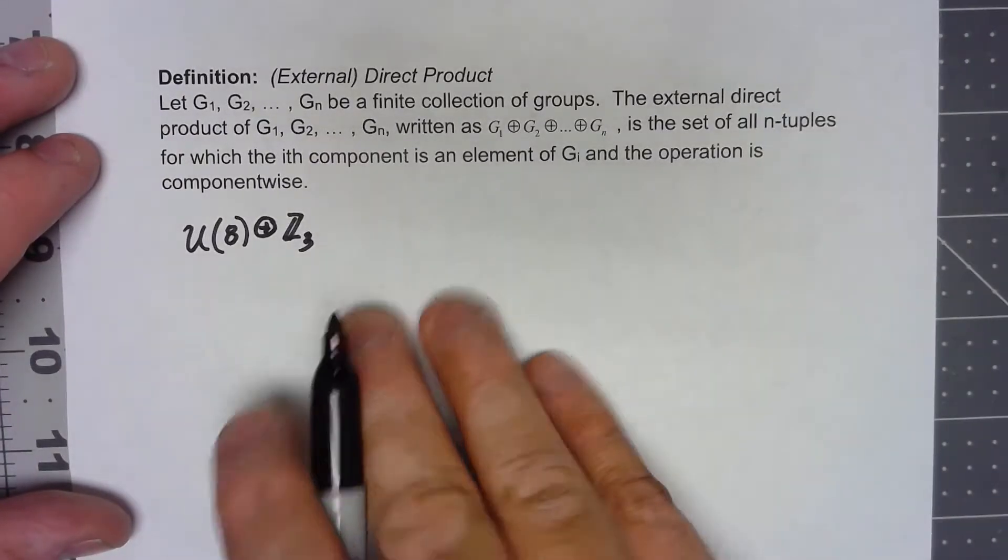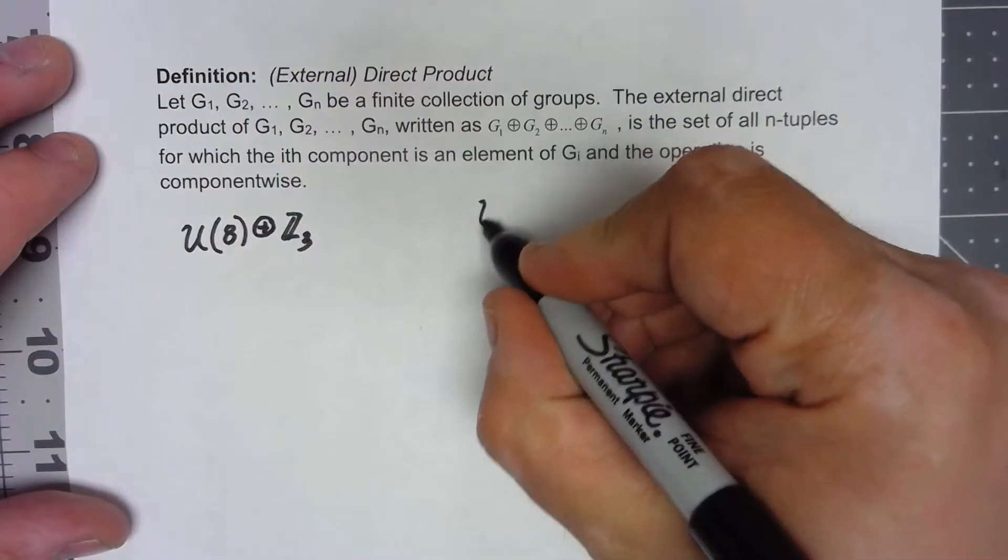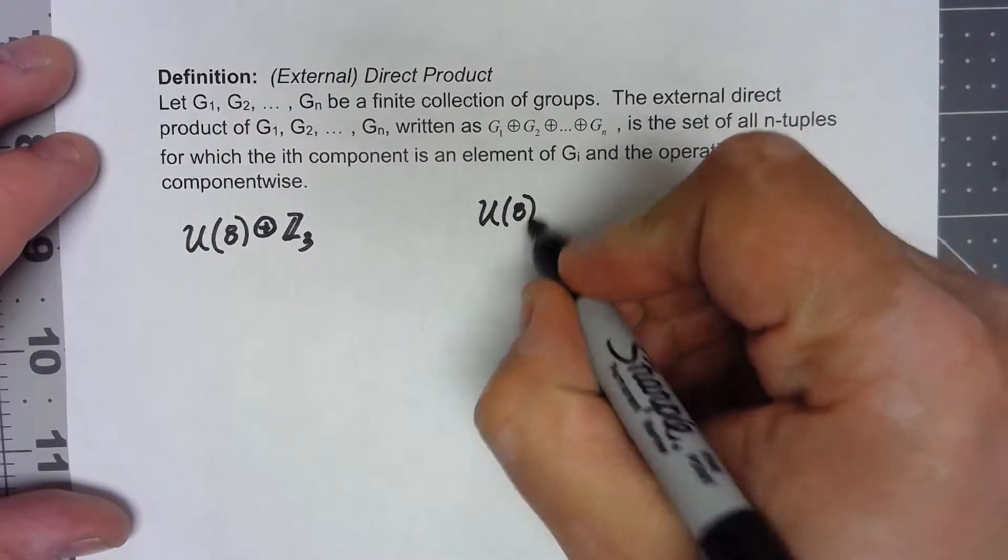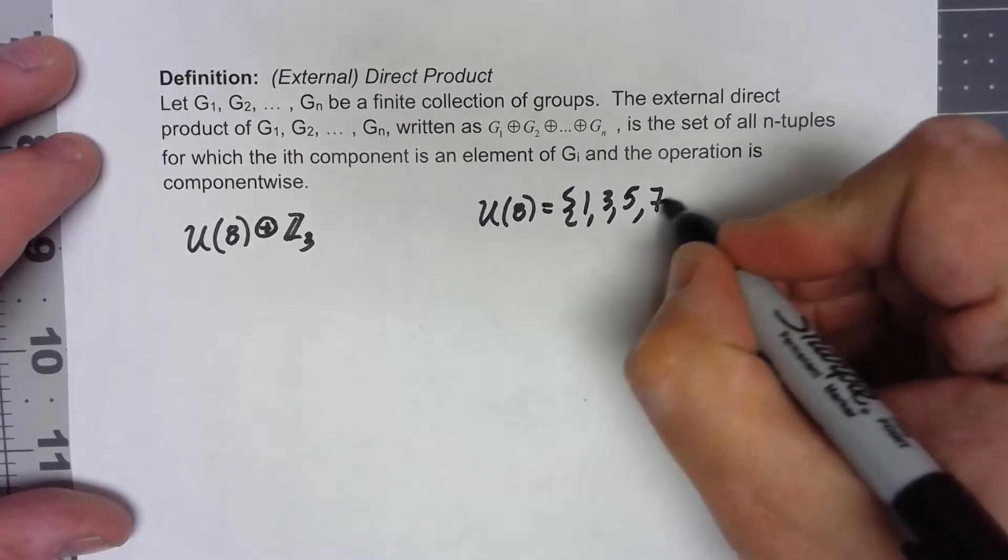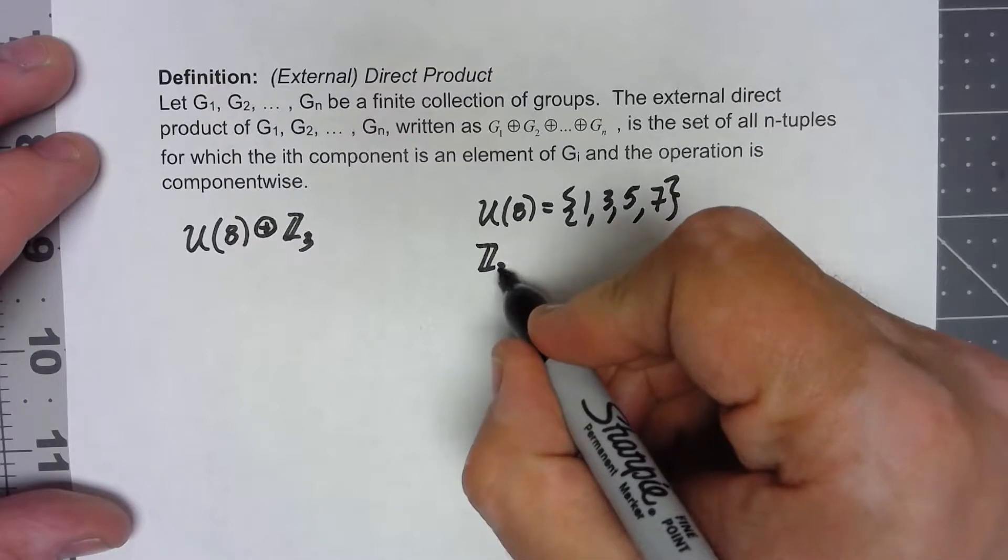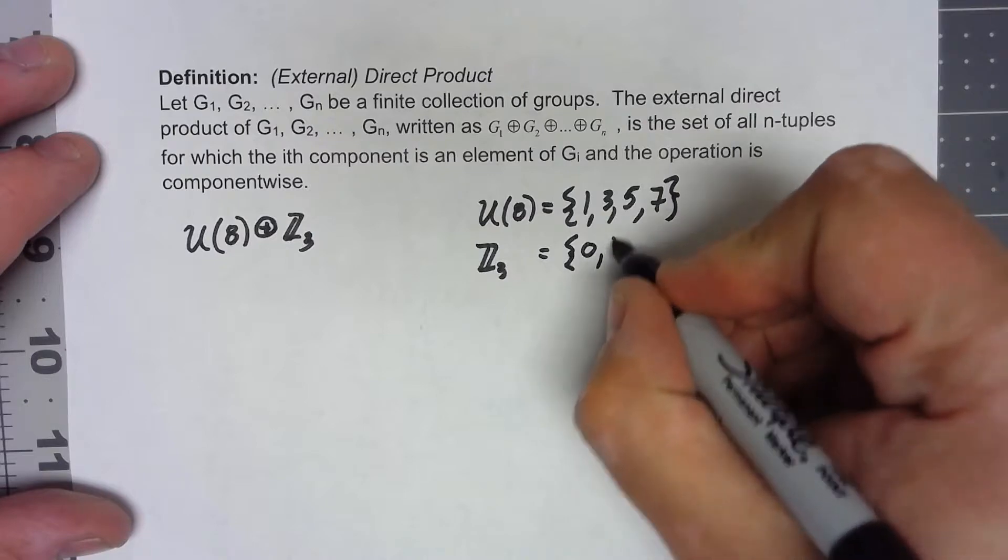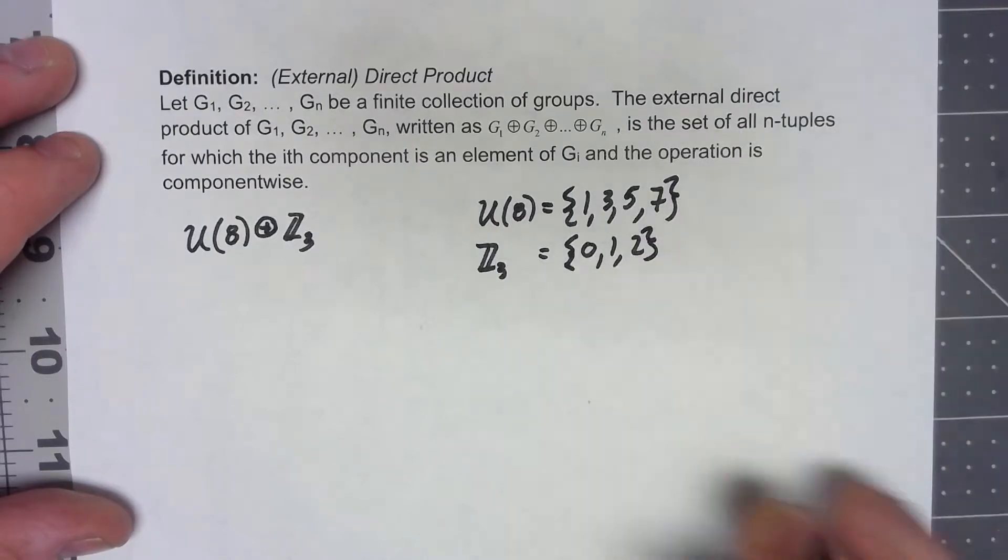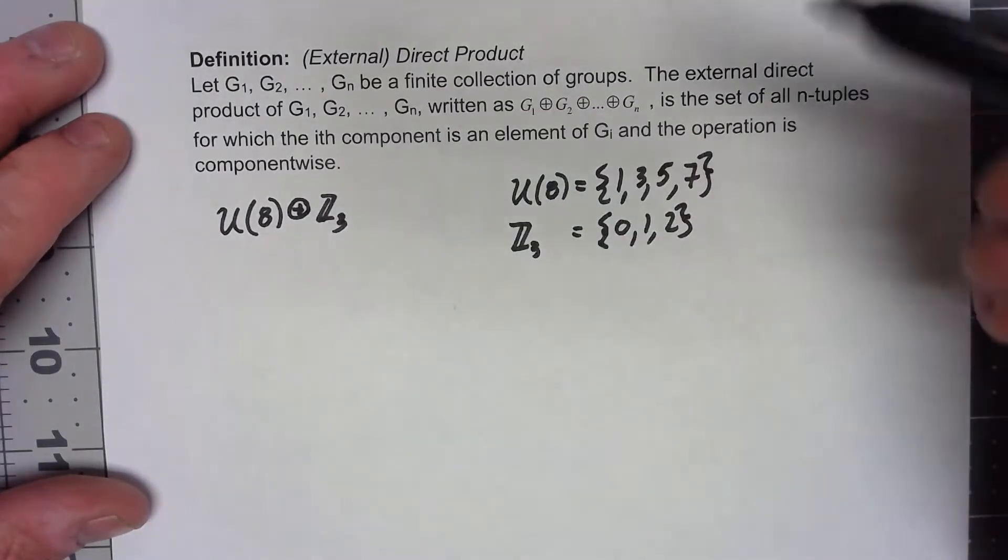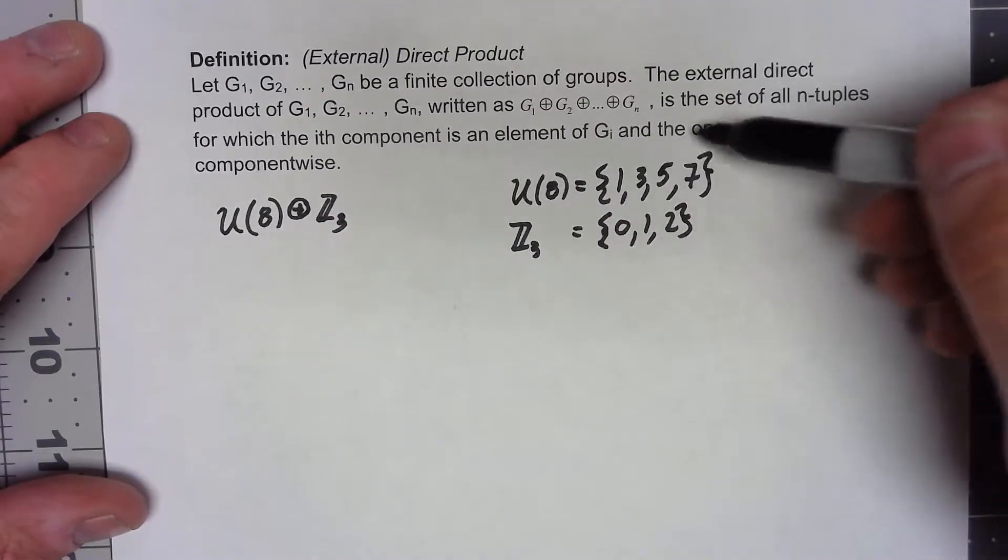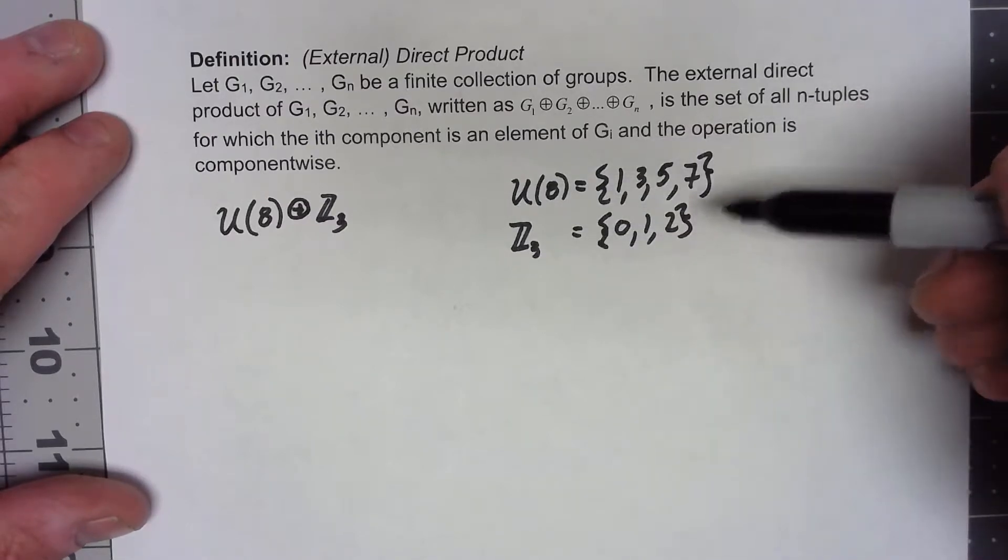What do the elements of this thing look like? Well, the elements of U(8) we know are 1, 3, 5, and 7. The elements of Z3 are 0, 1, and 2. So U(8) direct product with Z3 is the set of all ordered pairs. The first component comes from 1, 3, 5, 7. The second component comes from 0, 1, 2.